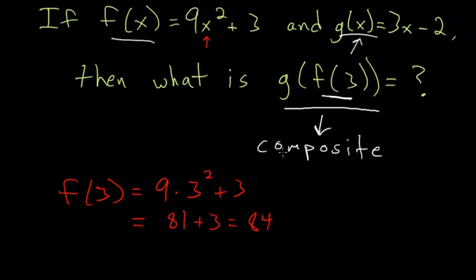And then so we'll take this value of f of 3, and we'll plug it into the function g. So in other words, I rewrite this: g of f of 3 is the same thing as g of 84, since f of 3 and 84 are equal to each other.